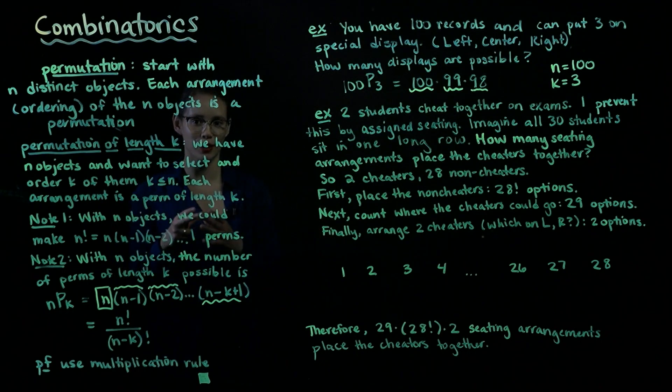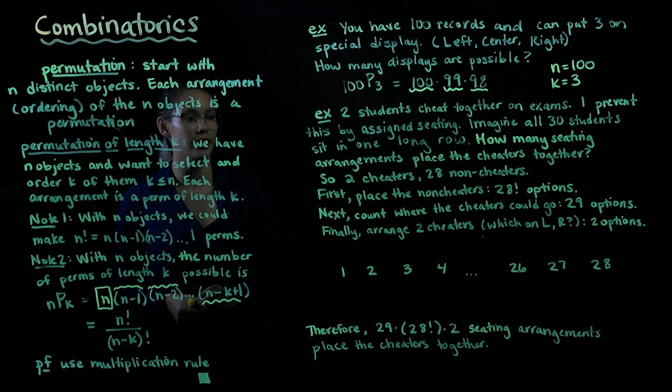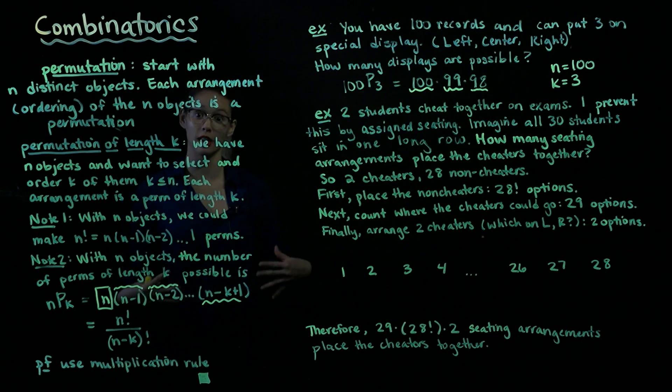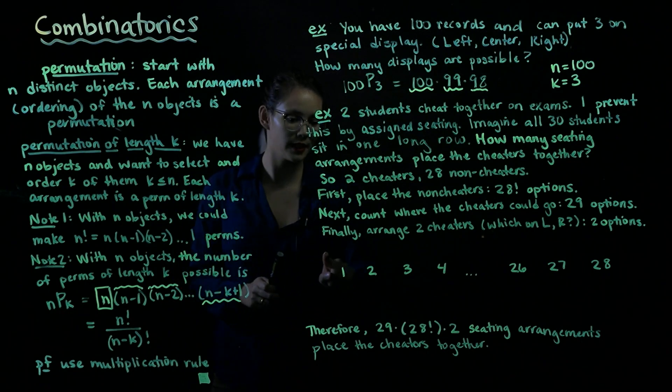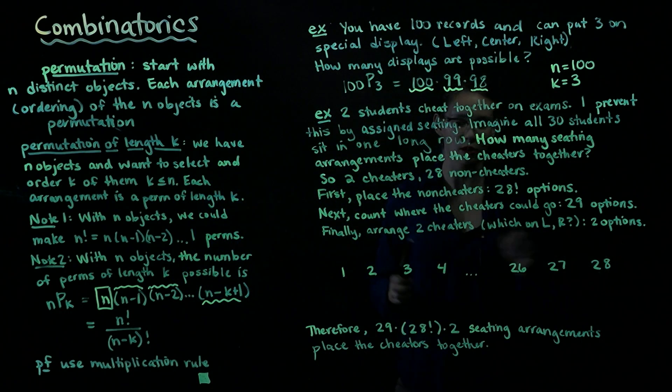Now imagine I have a very funny classroom. All the students just sit in one long row. How many different seating arrangements would place the two cheaters together? So first, the way that I think about this problem is figure out where the non-cheaters are going to go. So if this is the classroom, here's the left side of the classroom, here's the right side of the classroom, we'll have a bunch of desks here and then I will put them into those desks.